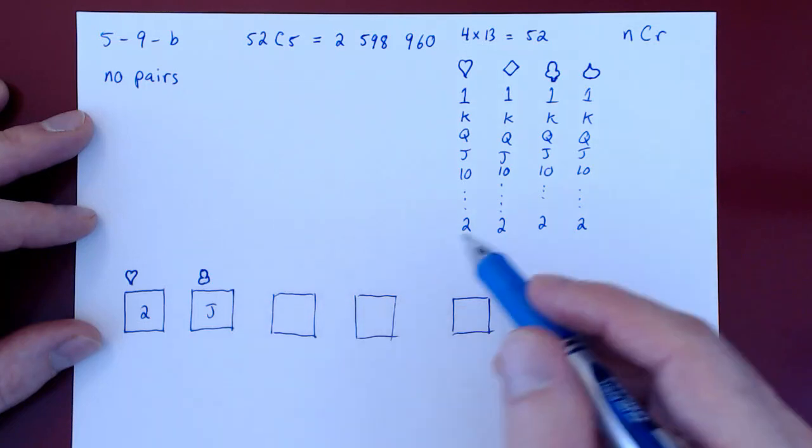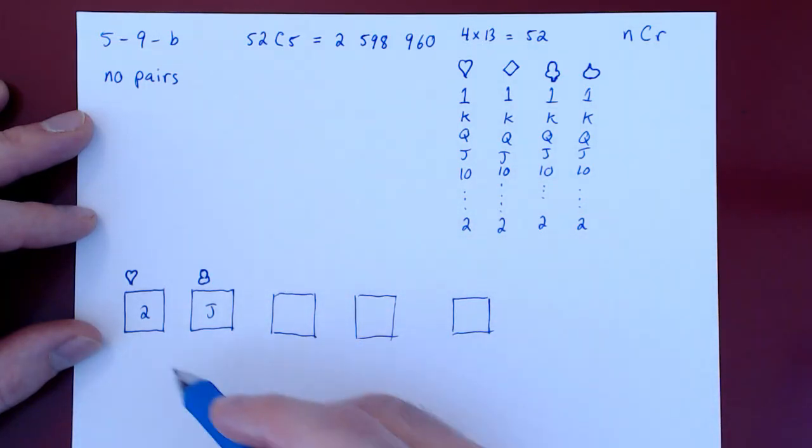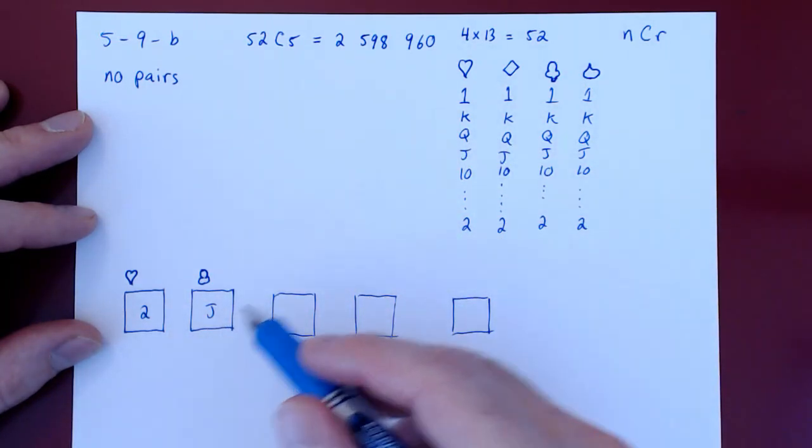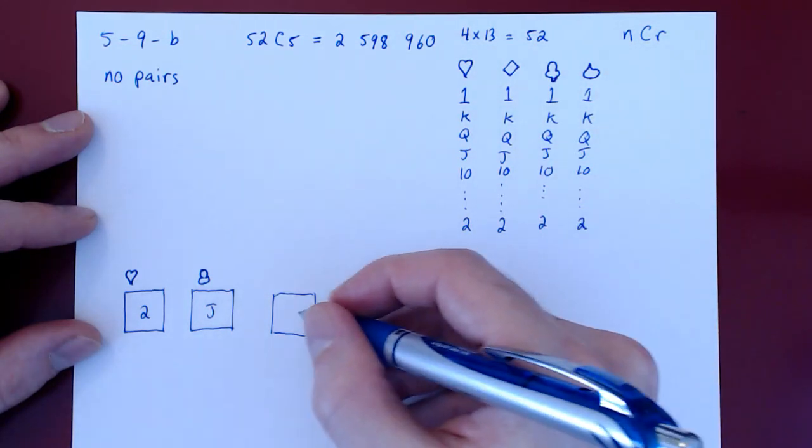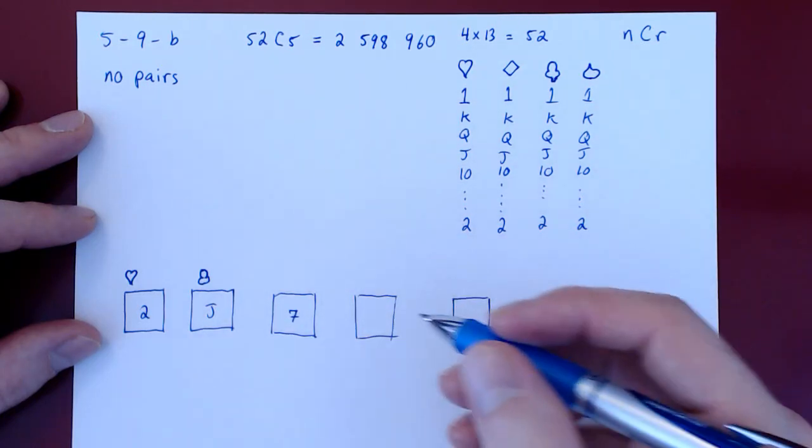Well, the third card can't be a two, that would give us a pair again, and can't be a jack. So we choose now a third different kind. Let's say a seven of diamonds.